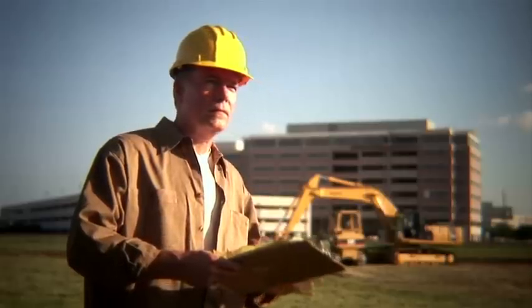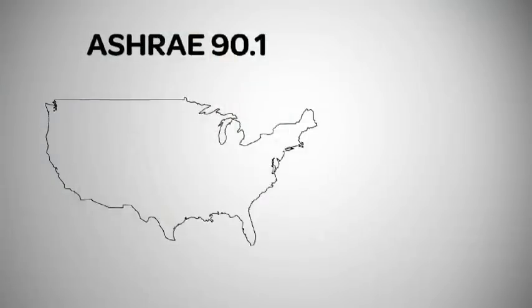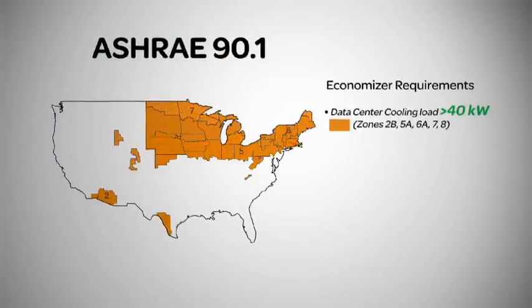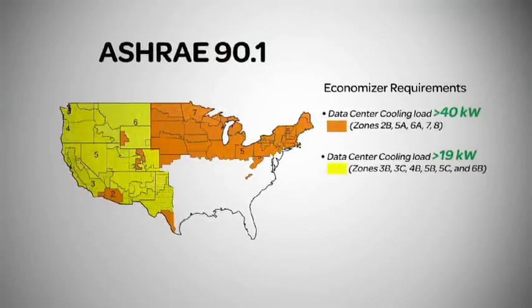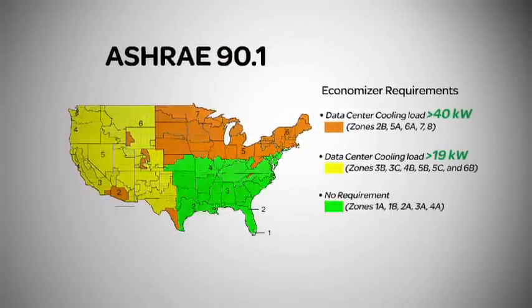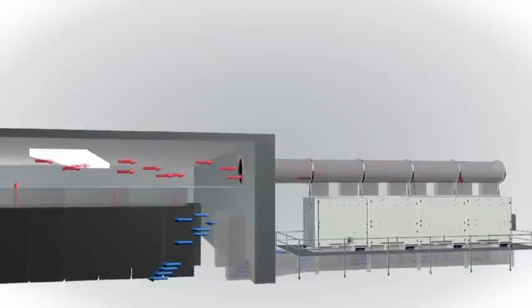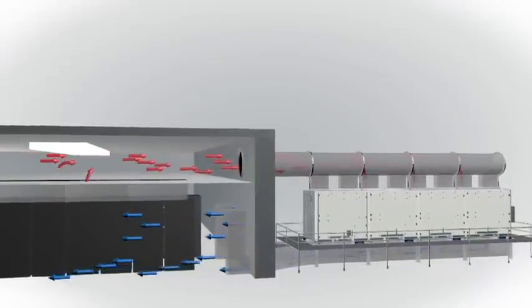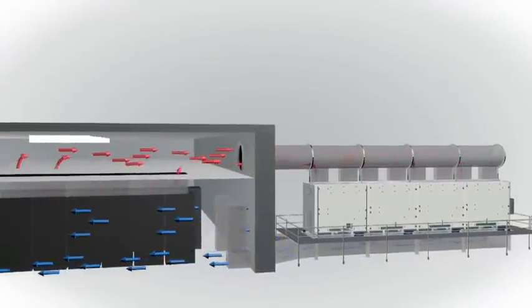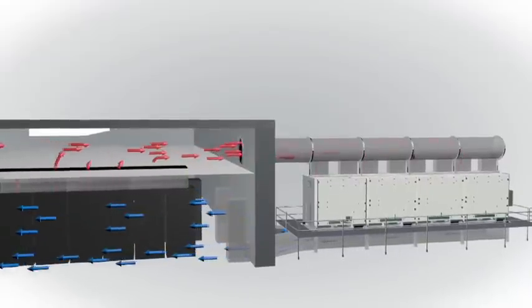In addition, stricter energy efficiency guidelines like ASHRAE 90.1 are forcing data centers to use more sustainable cooling methods like economization. It works on a very simple and intuitive premise. Cold air outside the data center can help cool hot air inside it. And economization has another name, free cooling.